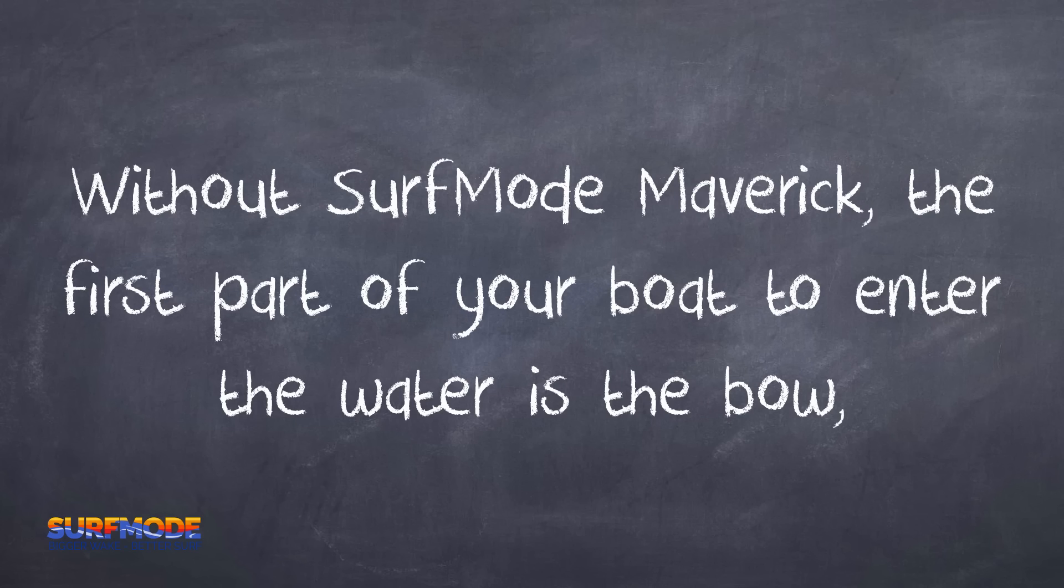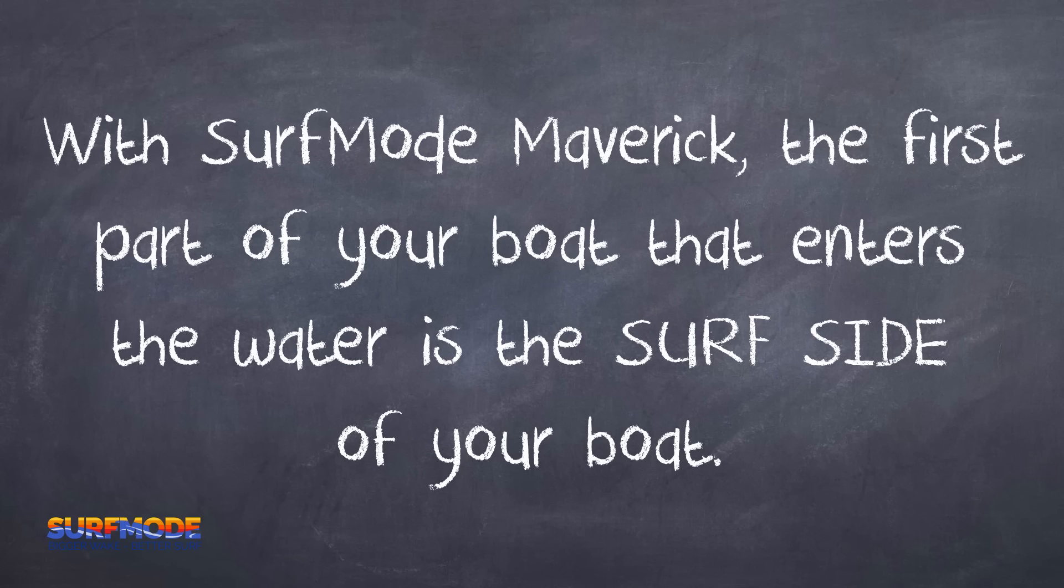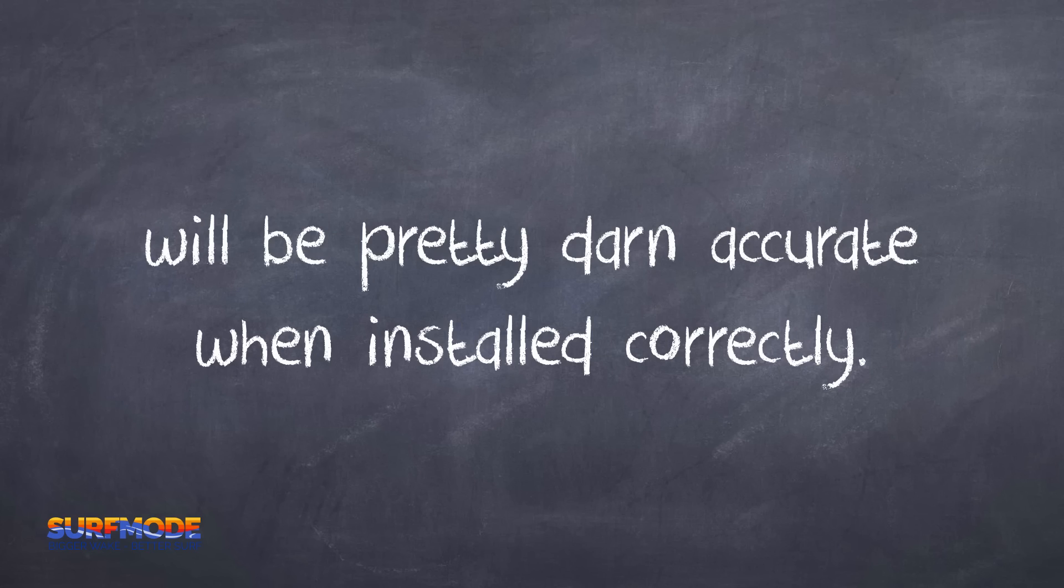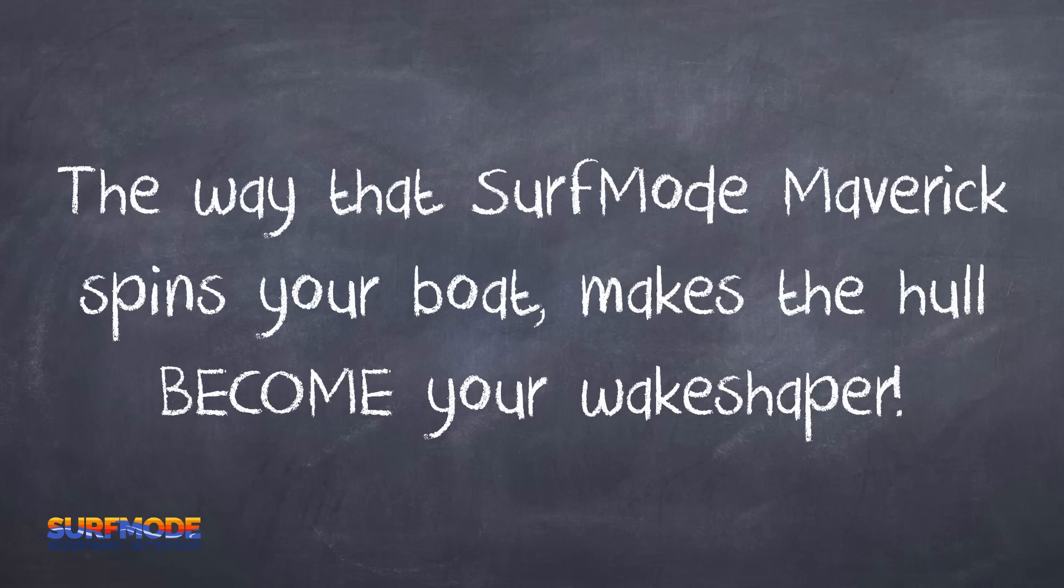Without Surf Mode Maverick, the first part of your boat to enter the water is the bow, and generally right in the center. With Surf Mode Maverick, the first part of your boat that enters the water is the surf side of your boat. This is why the estimate of how long your surf pocket should be will be pretty darn accurate when installed correctly. The way that Surf Mode Maverick spins your boat makes the hull become your wave shaper. Mind blown!